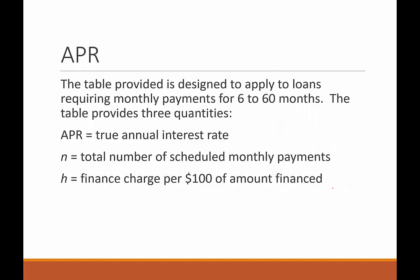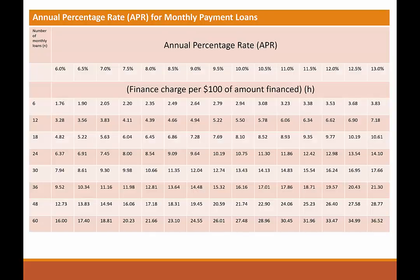A little bit more about the APR and how we calculate it. On the next slide, there's a table designed to apply to loans requiring monthly payments between 6 and 60 months. The table provides three different quantities: the APR, which is the true annual interest rate; N, which is the total number of scheduled monthly payments; and H, which is the finance charge for $100 of amount financed. Here is the table — it looks scary, but we're going to go through it step by step.